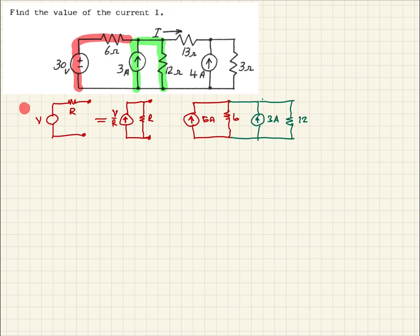So now we should be able to combine our current sources. We see that we have a 5 amp and a 3 amp in series. So that's 5 plus 3 is 8. Let's get a new color here.